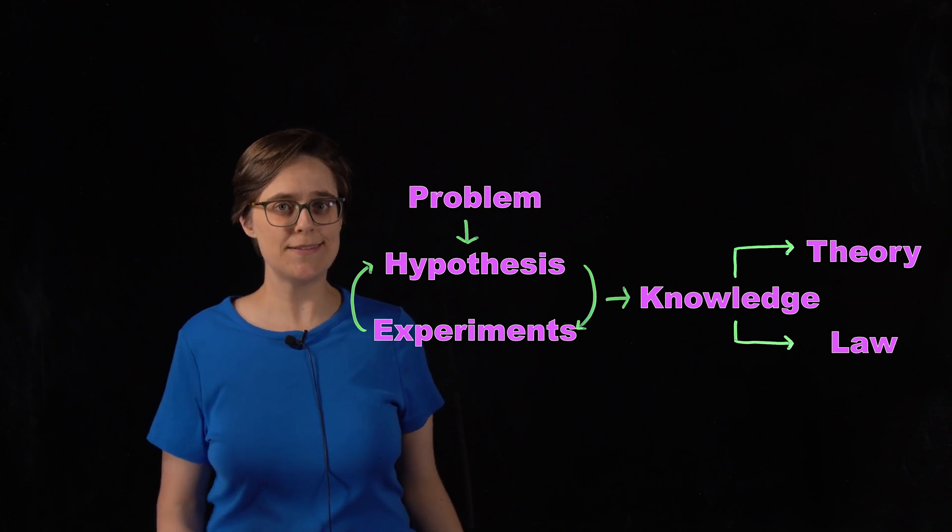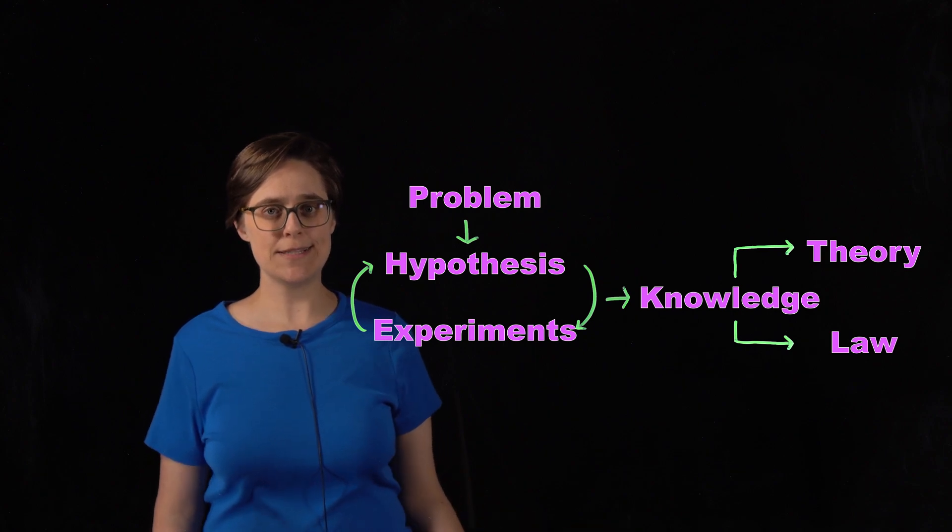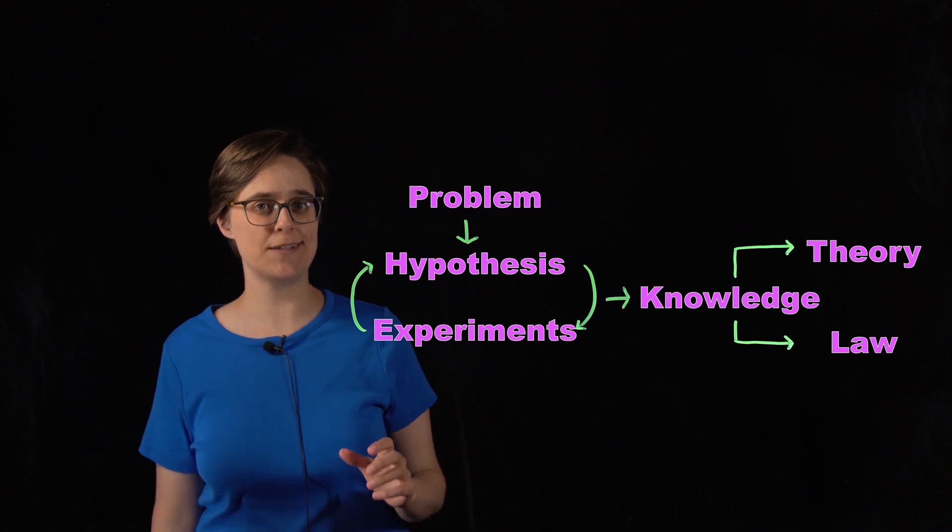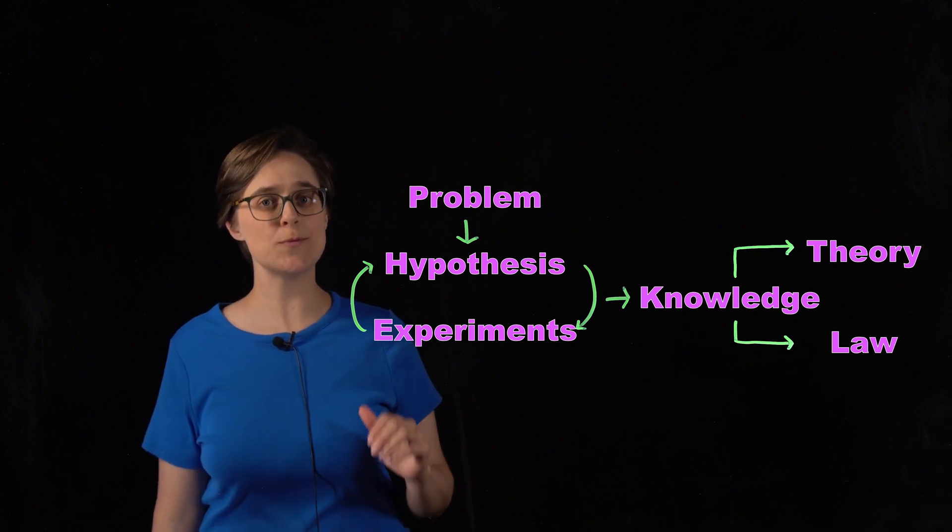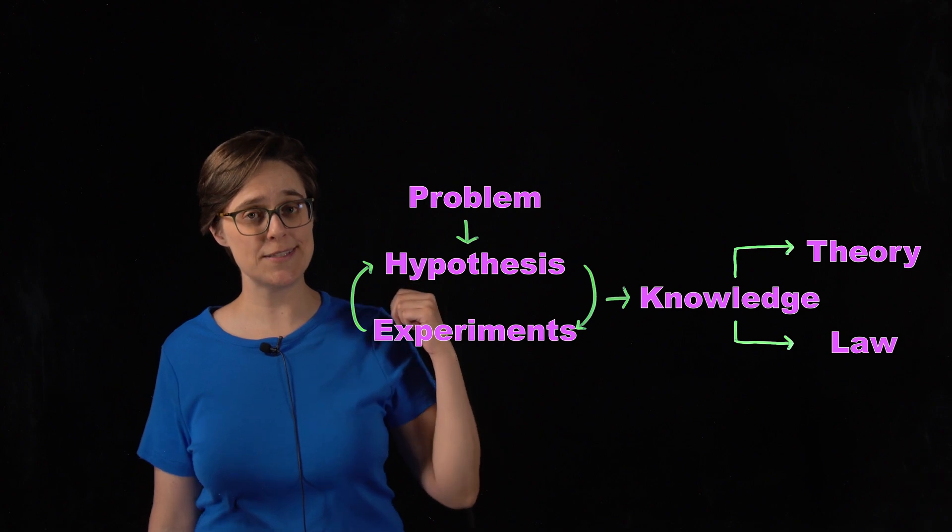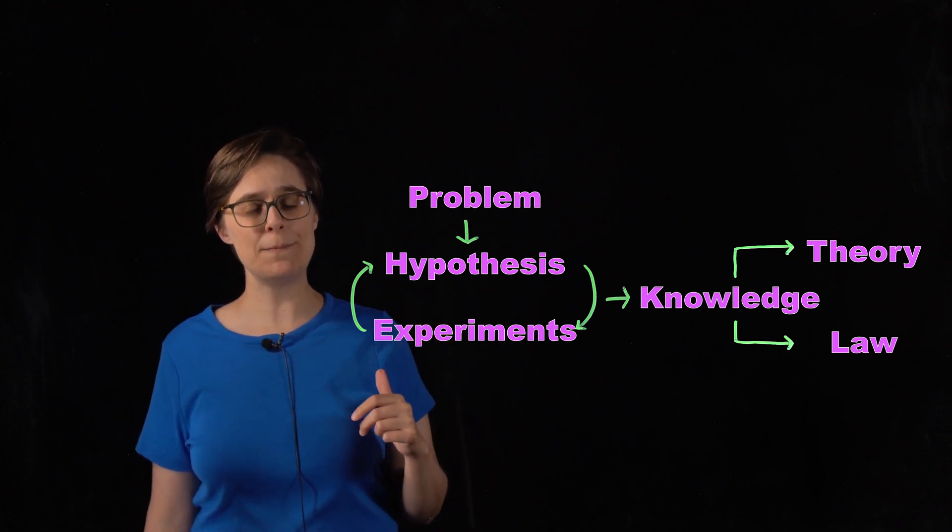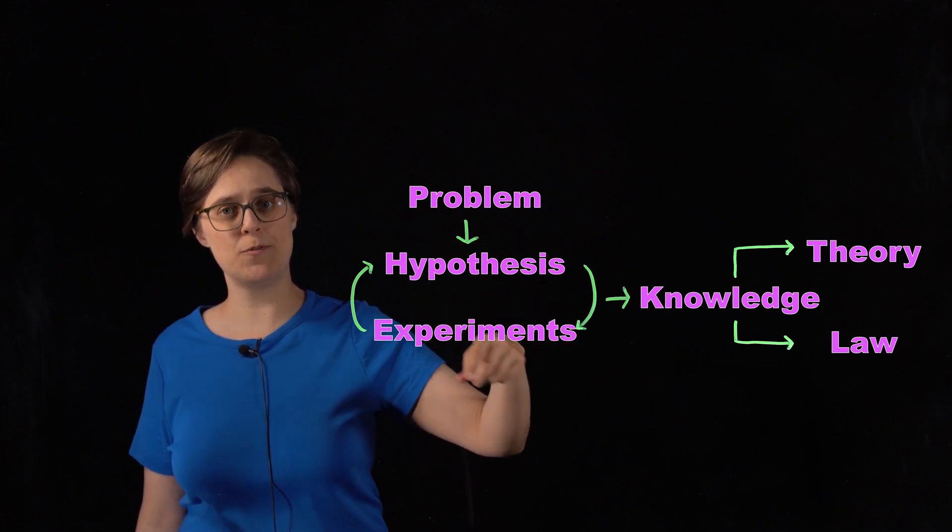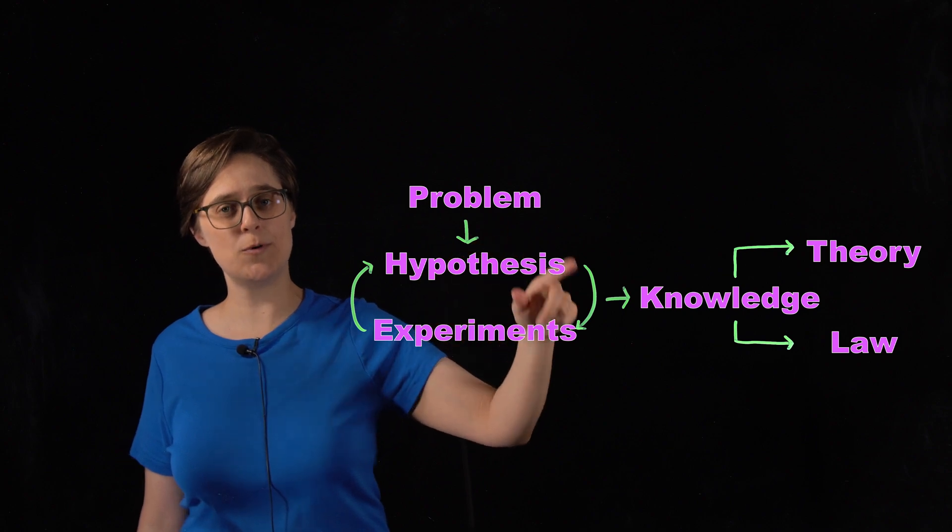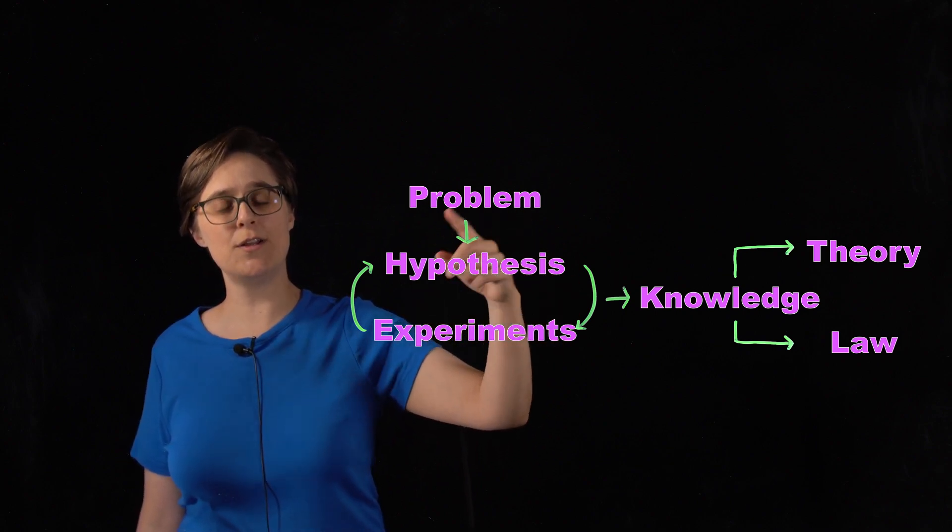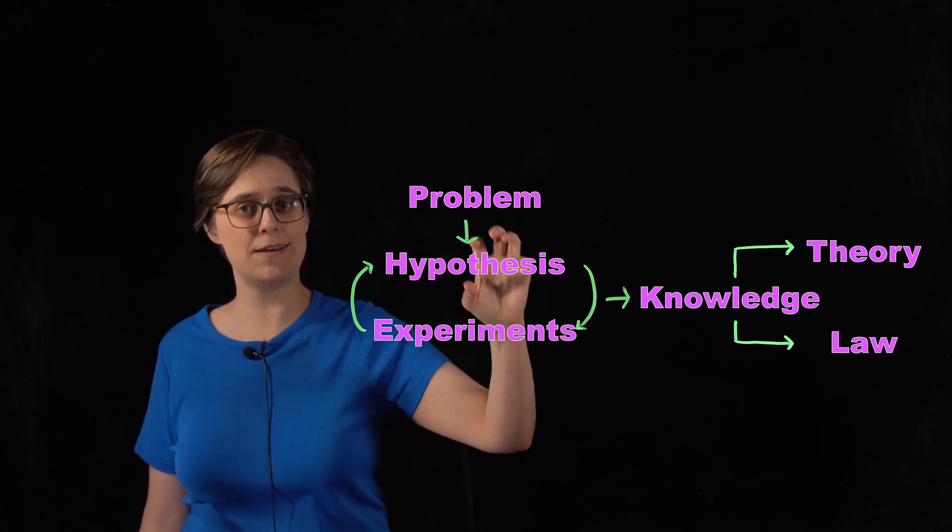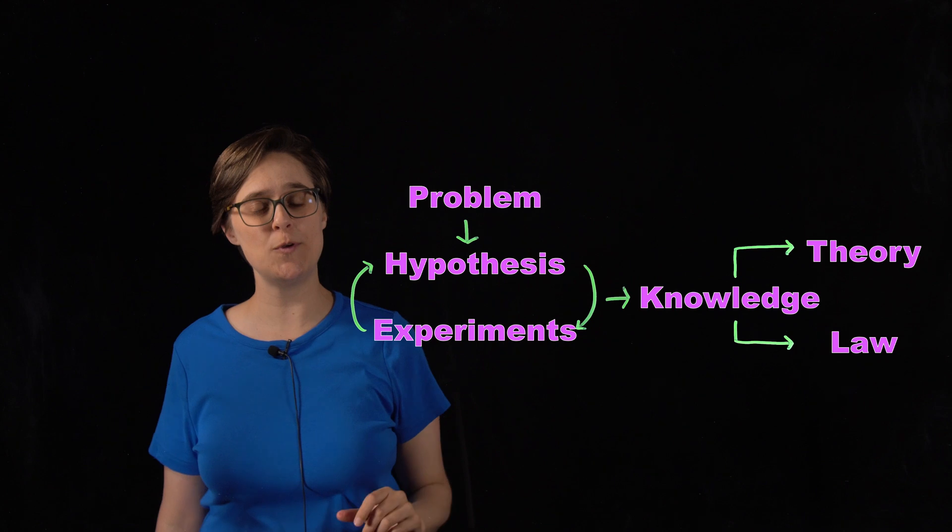But the scientific method isn't always working this smoothly. You don't always find things in the first place you look. Let's go back and consider what would have happened if we never found those missing socks in the washer. The hypothesis was wrong, and it needs to be discarded or modified. It does not matter how many hypotheses you come up with and how many experiments you perform. If your hypothesis is not supported by data, it needs to be discarded or modified. Until you find a hypothesis that is supported by data, then it can contribute to the body of knowledge.